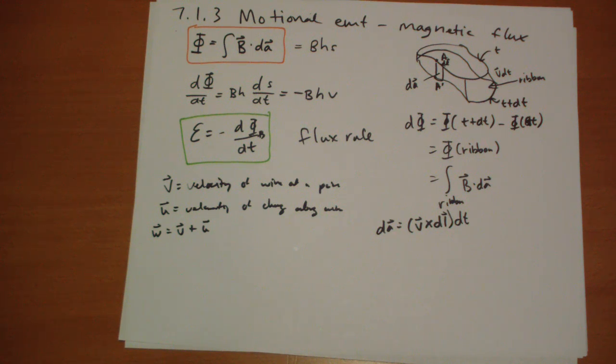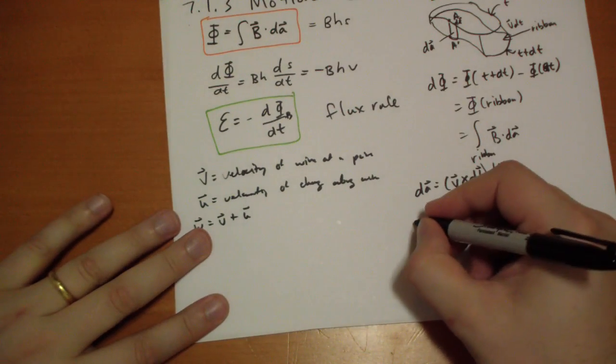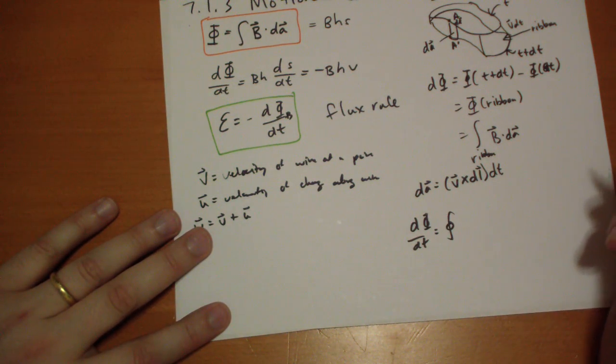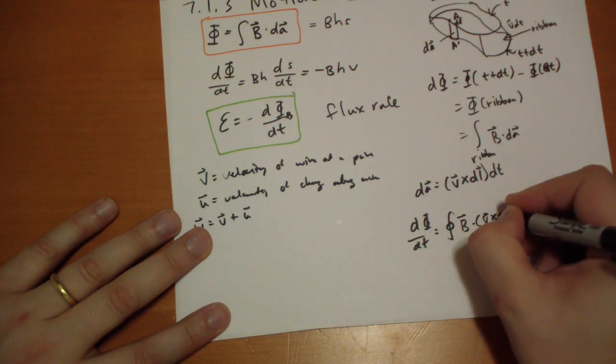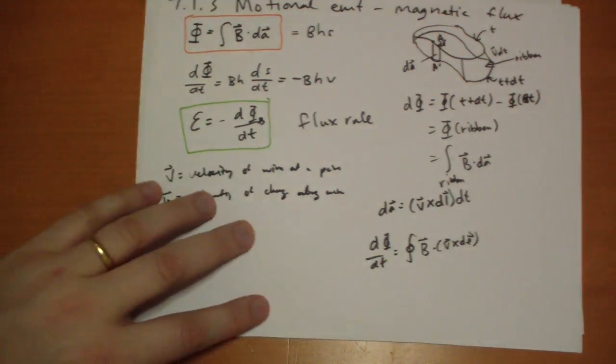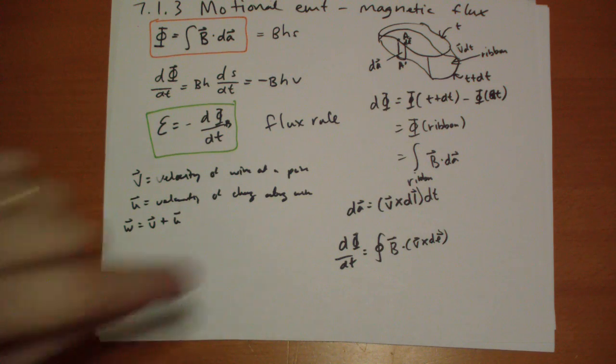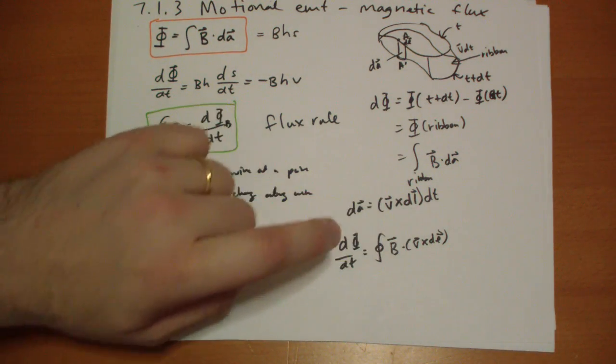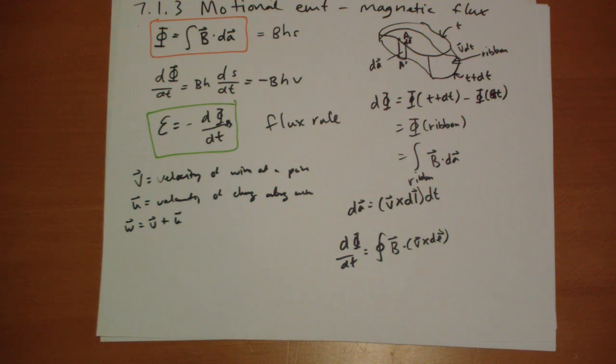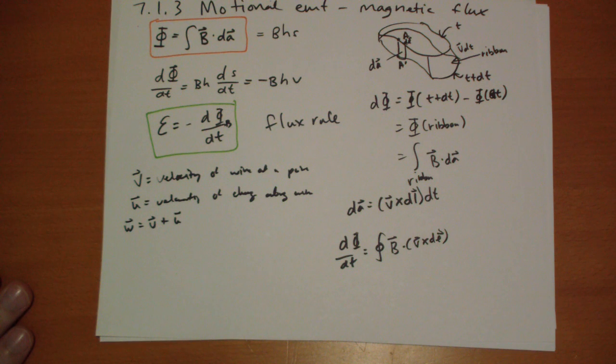And so the flux, the change in flux over time, D phi by DT is equal to the closed surface B vector dot V vector cross DL vector. The change in flux. We can rewrite this. I think this warrants more explanation. Where did this equation come from? Well, the DA vector is this guy. So we plug that in there. And the DT just goes on the bottom there. Now we understand where that comes from.